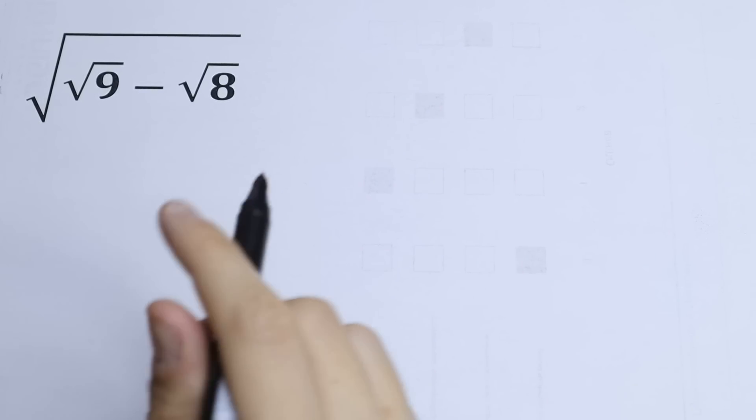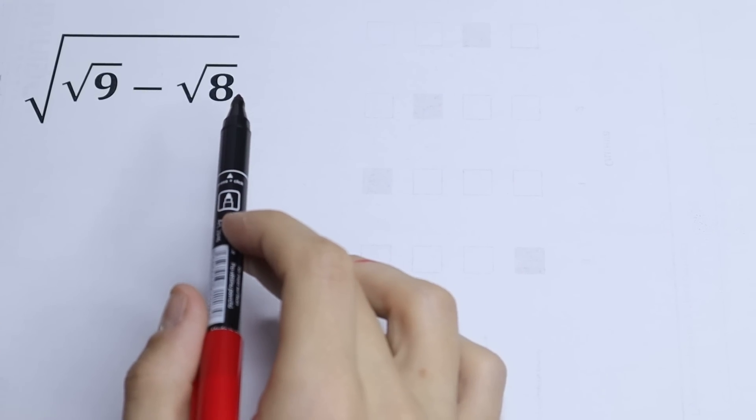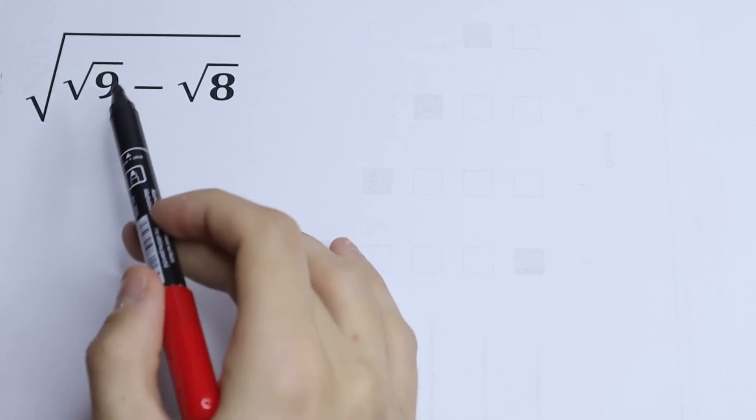Hello everyone, welcome back to Maths Mood. Here we have an interesting algebra problem. So we need to simplify this. We have √(√9 - √8).